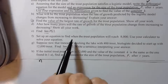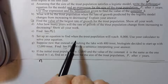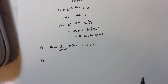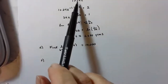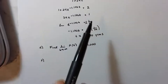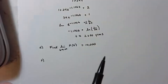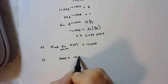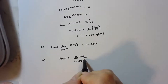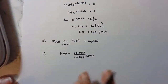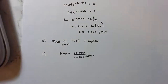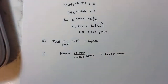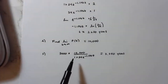Part (f): Set up an equation to find when the trout population will reach 8,000. We use the population expression: 8,000 = 10,000 / (1 + 24e^(−1.186t)). Using a calculator to solve, you should get approximately t ≈ 3.850 years — so almost four years for the trout population to reach 8,000. Remember to round to three decimal places on AP.